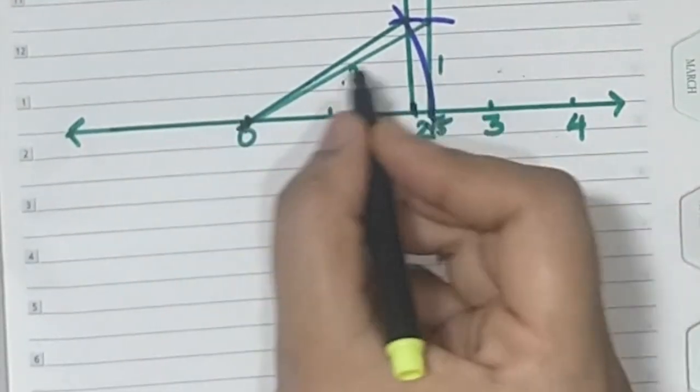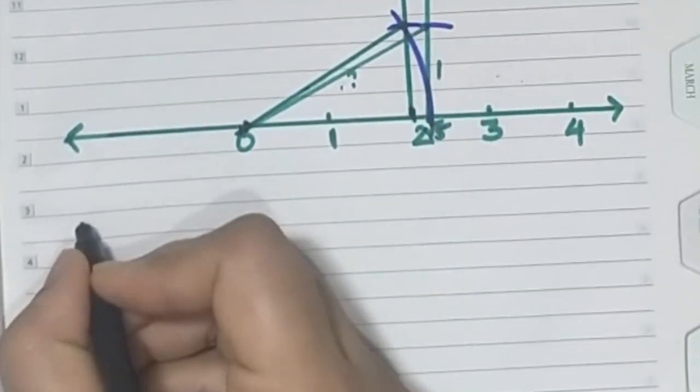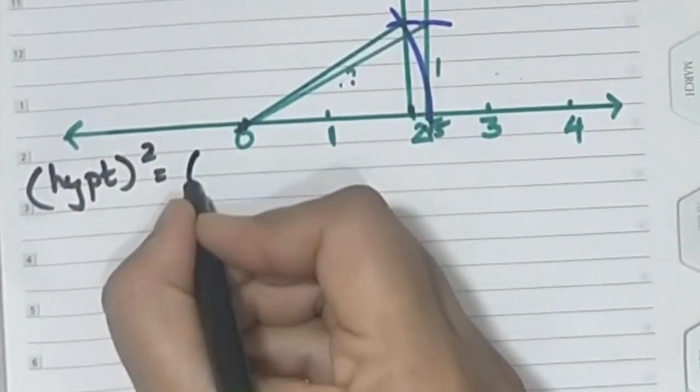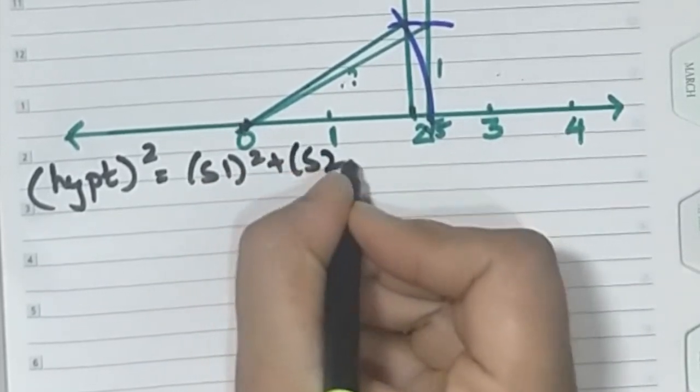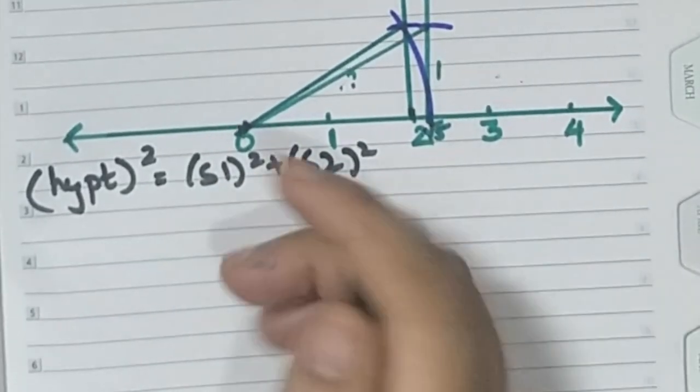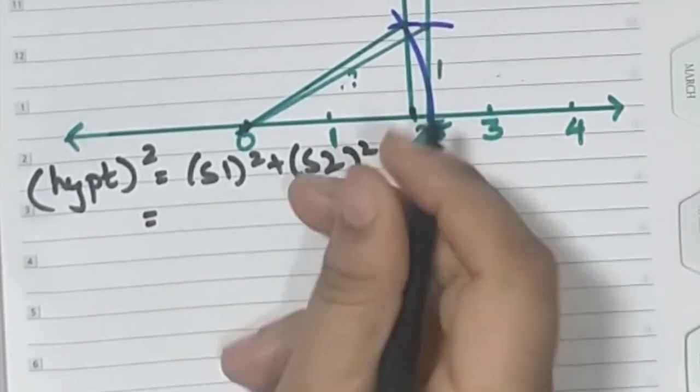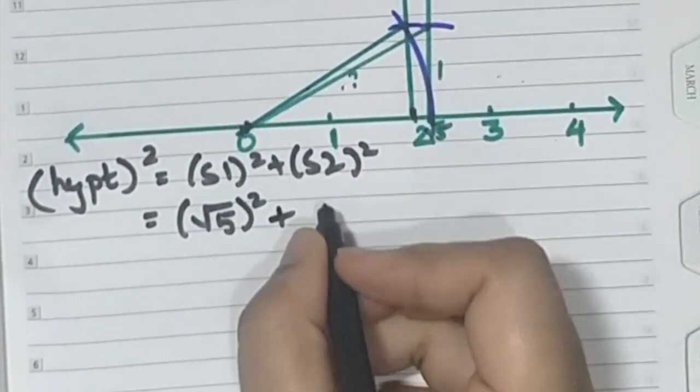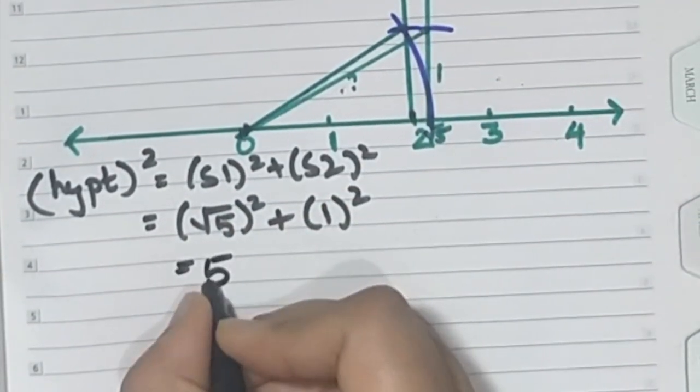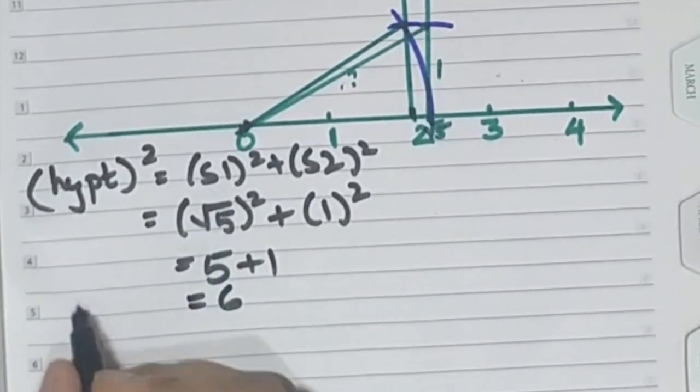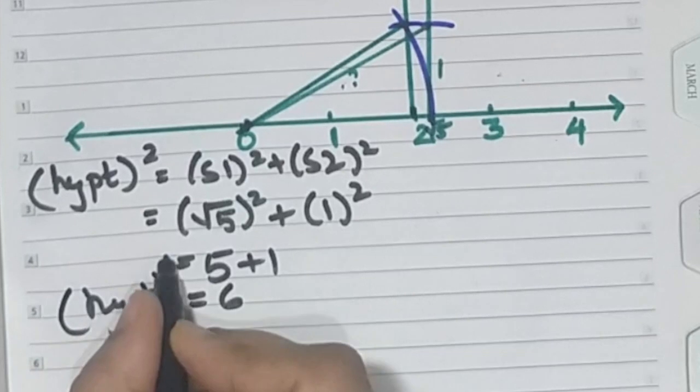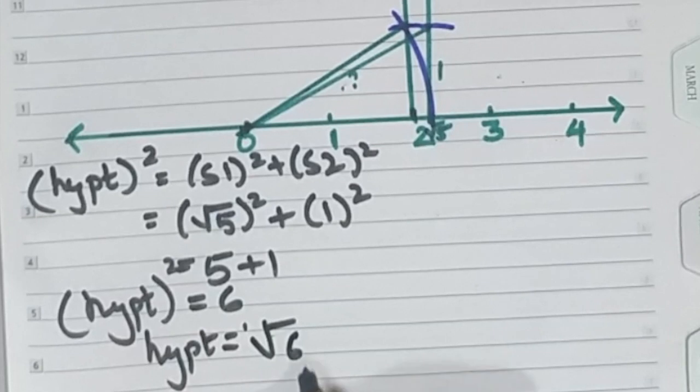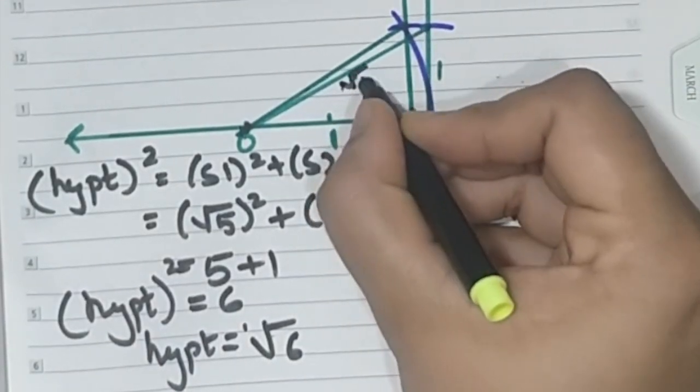So according to Pythagoras theorem, hypotenuse square is equal to side 1 square plus side 2 square. That is (√5)² + (1)², which equals 5 plus 1 equals 6. So hypotenuse square is 6. Therefore, hypotenuse is root 6. So basically this is root 6.